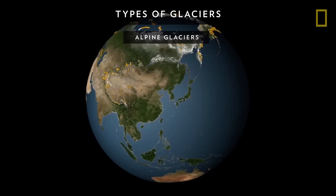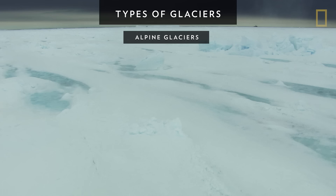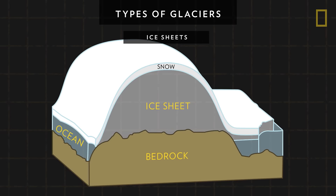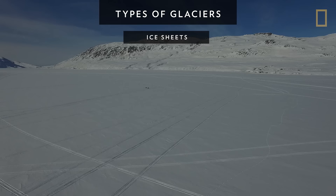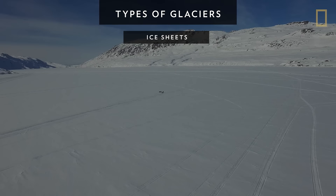These glaciers are found on every continent except Australia. Ice sheets, unlike alpine glaciers, are not limited to mountainous areas. They form broad domes and spread out from their centers in all directions. As ice sheets spread, they cover everything around them with a thick blanket of ice, including valleys, plains, and even entire mountains.